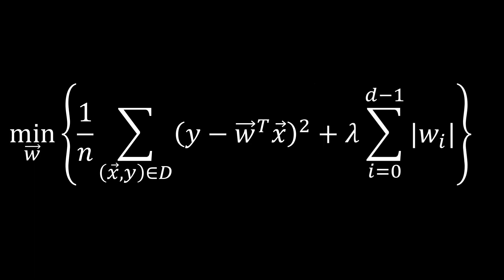This is called lasso regression. Note that the cost here incentivizes the model to set the weights of all features it does not need to zero, as this will lead to a better objective value. The penalty for using a feature is weighted against the original objective by lambda.